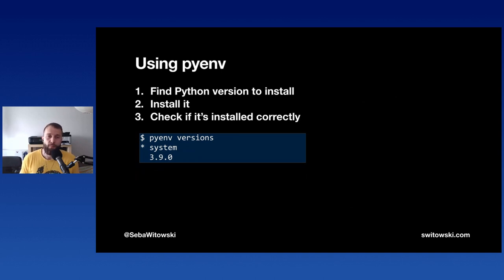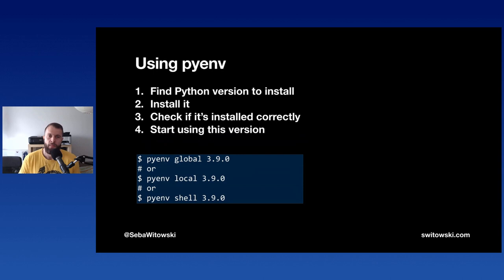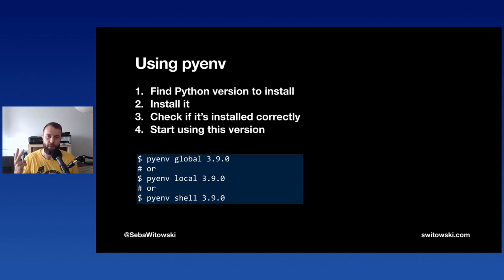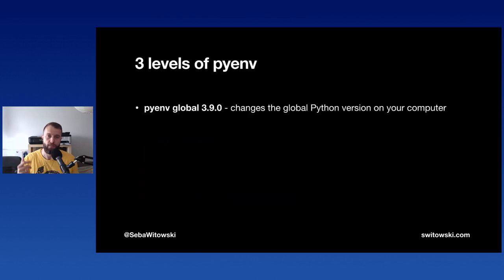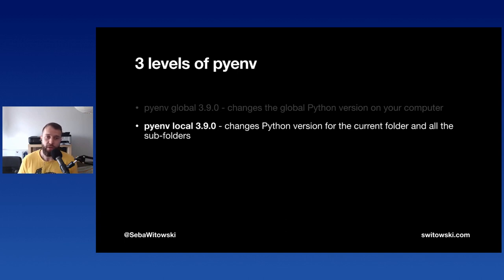Once done, run `pyenv versions` to verify the new version is installed correctly. Now you need to tell pyenv which version to use. There are three levels: global, local, and shell. Nine out of ten times you'll want to change the global Python version — just run `pyenv global 3.9.0` and from then on you're using Python 3.9.